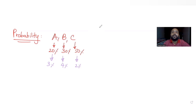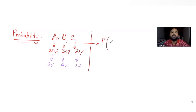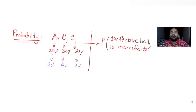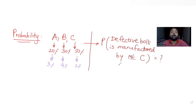A bolt is drawn at random from the product, and if the bolt drawn is found to be defective, we need to find out the probability of that defective bolt being manufactured by machine C. Let's find that out.